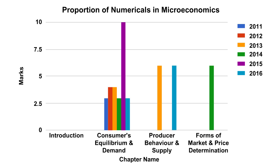Let's talk about the numerical section. In microeconomics, a question from elasticity of demand was not asked, but a question from elasticity of supply was asked. The question on consumer equilibrium using the utility approach was the same that was asked in last year's paper.